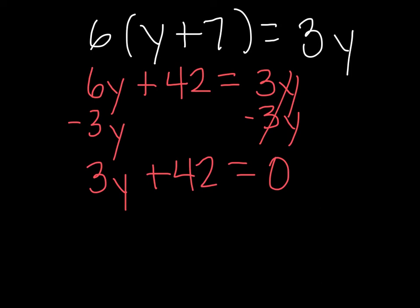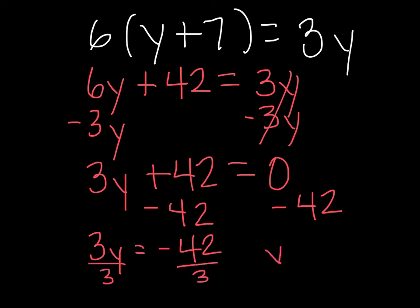Now I have to isolate my variable. So I'm going to subtract 42 or add 42 negatives. So 3y weighs the same as 42 negatives. So I'm going to divide by 3. So y has a weight of negative 14, not negative 7. I don't know why I said negative 7.